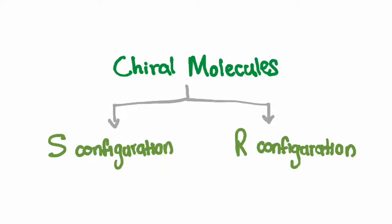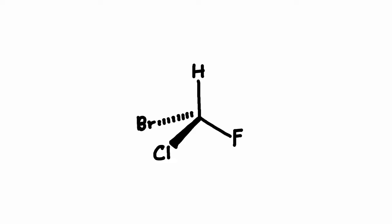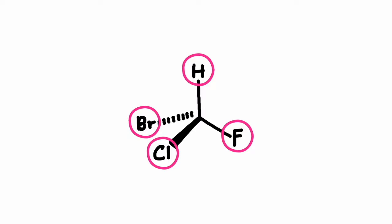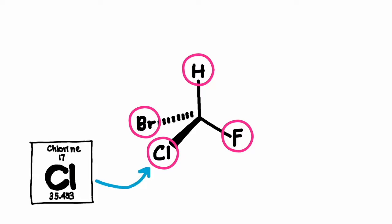Now that we've considered how S and R configurations apply to the realm of stereochemistry, let's dive deeper into how we can assign a molecule as S or R. The assignment of S and R configurations is based on a system called the Cahn-Ingold-Prelog priority rules. These rules prioritize substituents attached to the chiral center based on the atomic number of the atoms directly bonded to the chiral center.